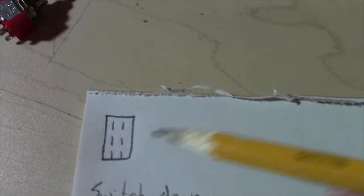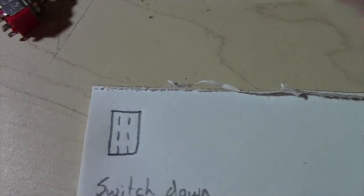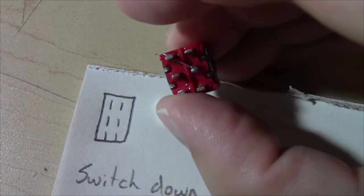So on a double pole, double throw switch, your poles will look like this on the underside. You know, they kind of look like that.